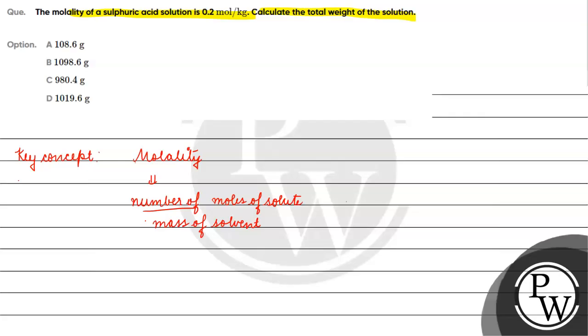And if we have 0.2 mole per kg, what will happen? Mass of solvent is 1 kg, which we can say is 1000 grams.